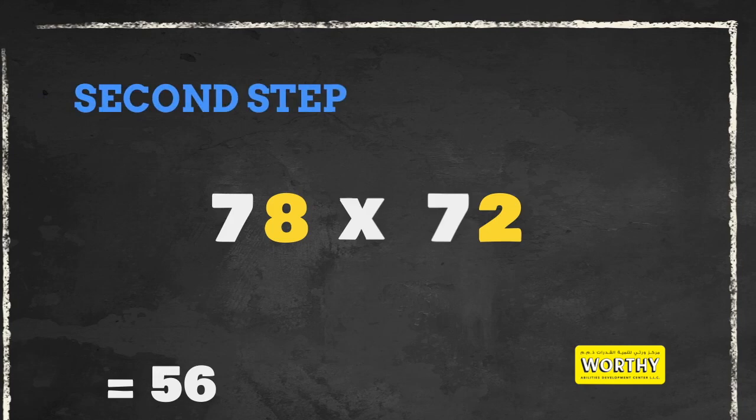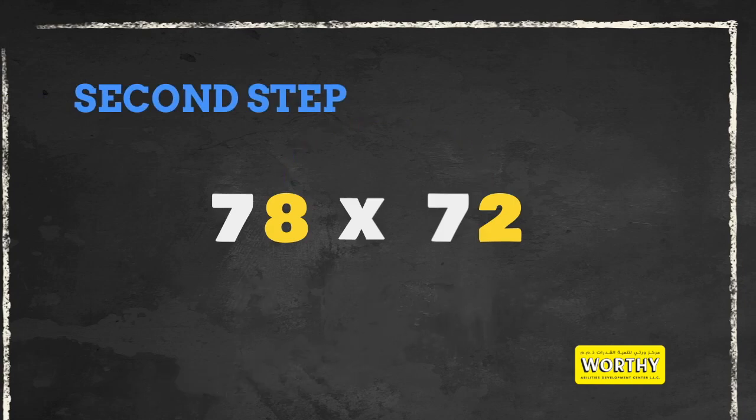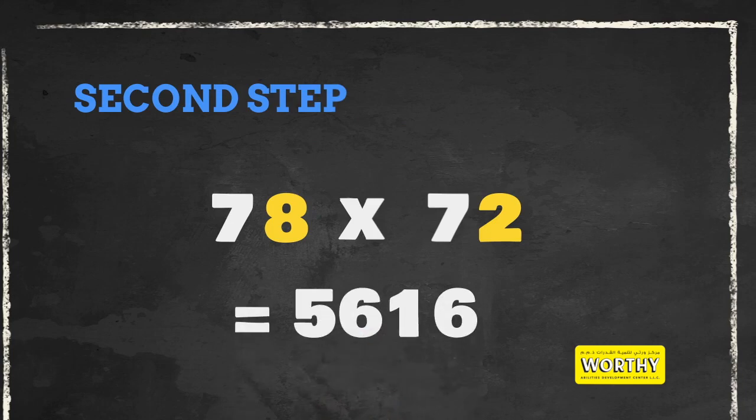Second step, multiply the 1's value and put it together with your answer in step 1. There you got your answer. 78 times 72 is equals to 5616.